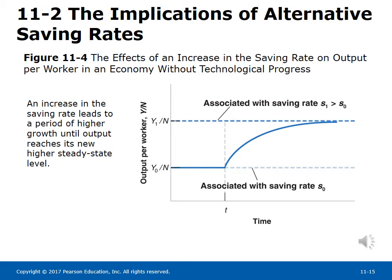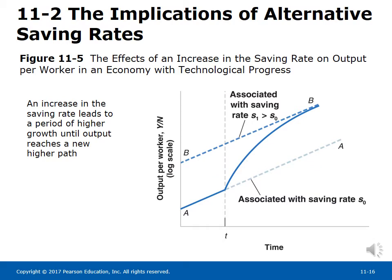Figure 11-4 shows the effects of an increase in the saving rate on output per worker in an economy without technological progress: an increase leads to a period of higher growth until output reaches its new higher steady state. Figure 11-5 extends this to an economy with technological progress. An economy with technological progress has a positive long-run growth rate of output per worker independent of the saving rate. The saving rate affects the level of output per worker. An increase in the saving rate leads to growth above the steady-state rate until the economy reaches its new higher path.